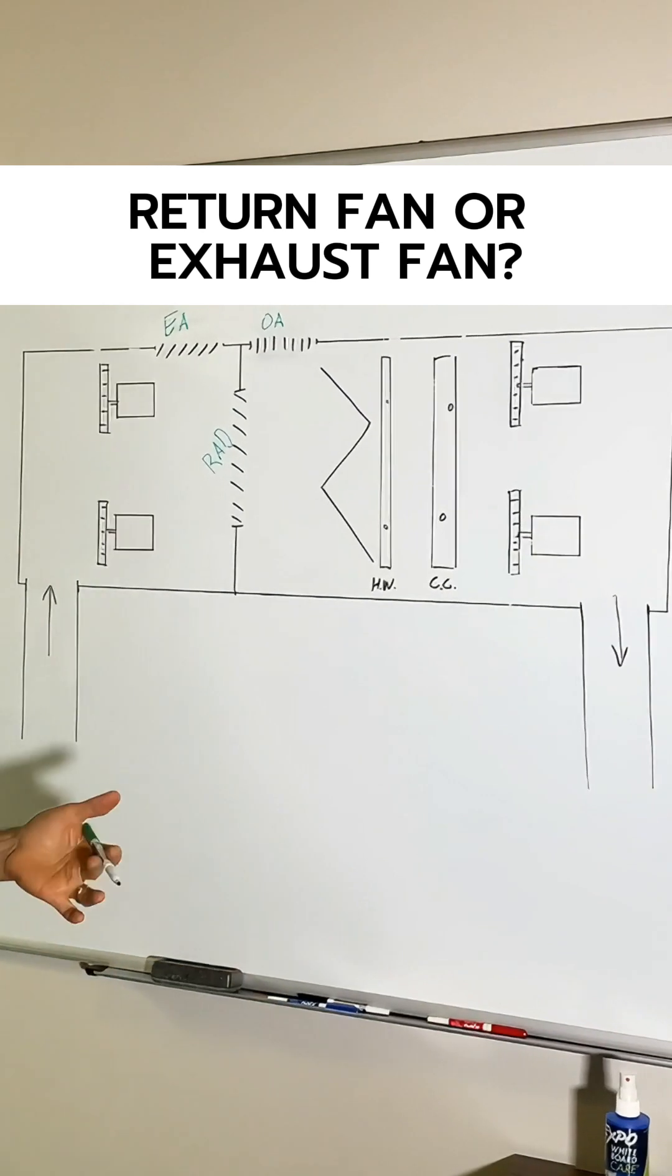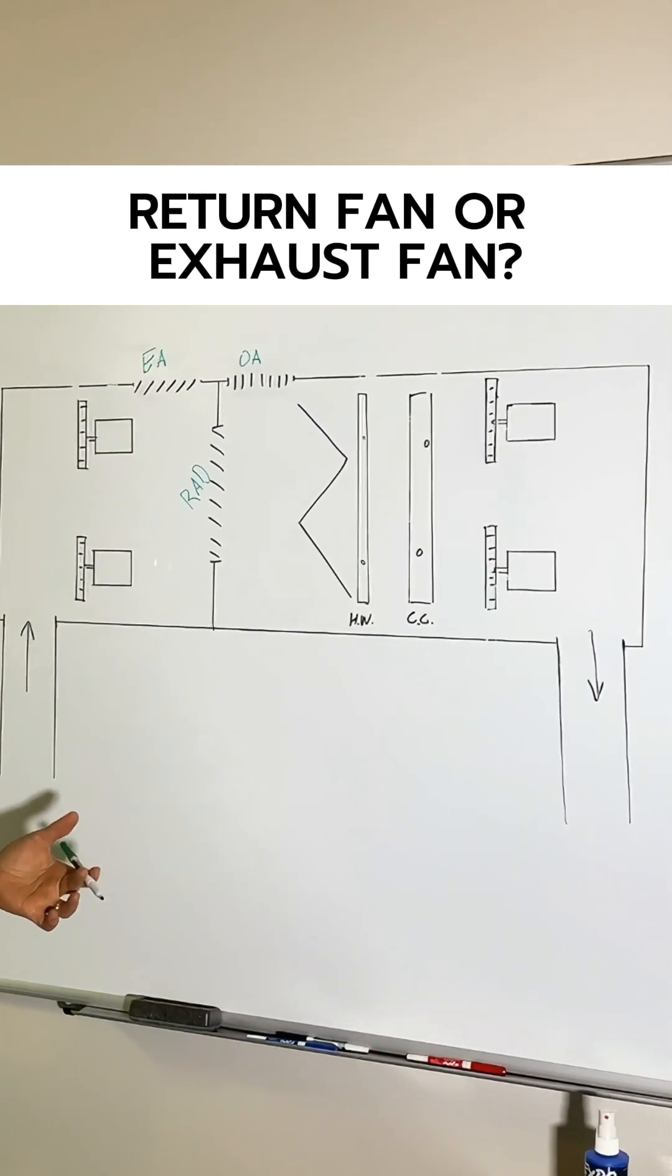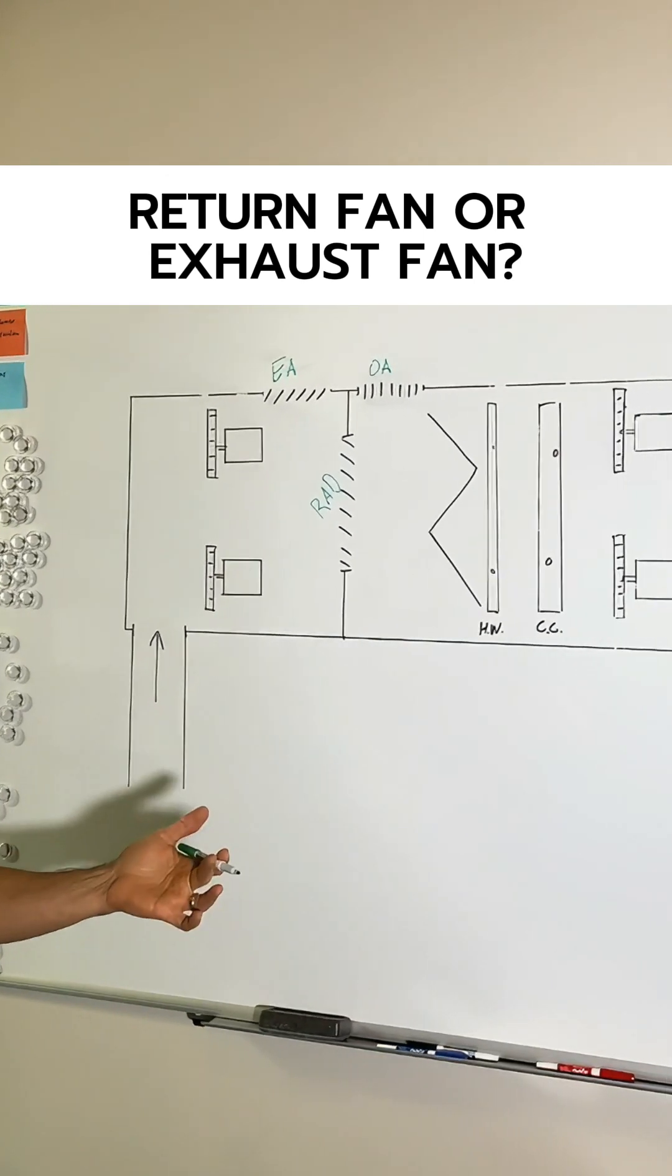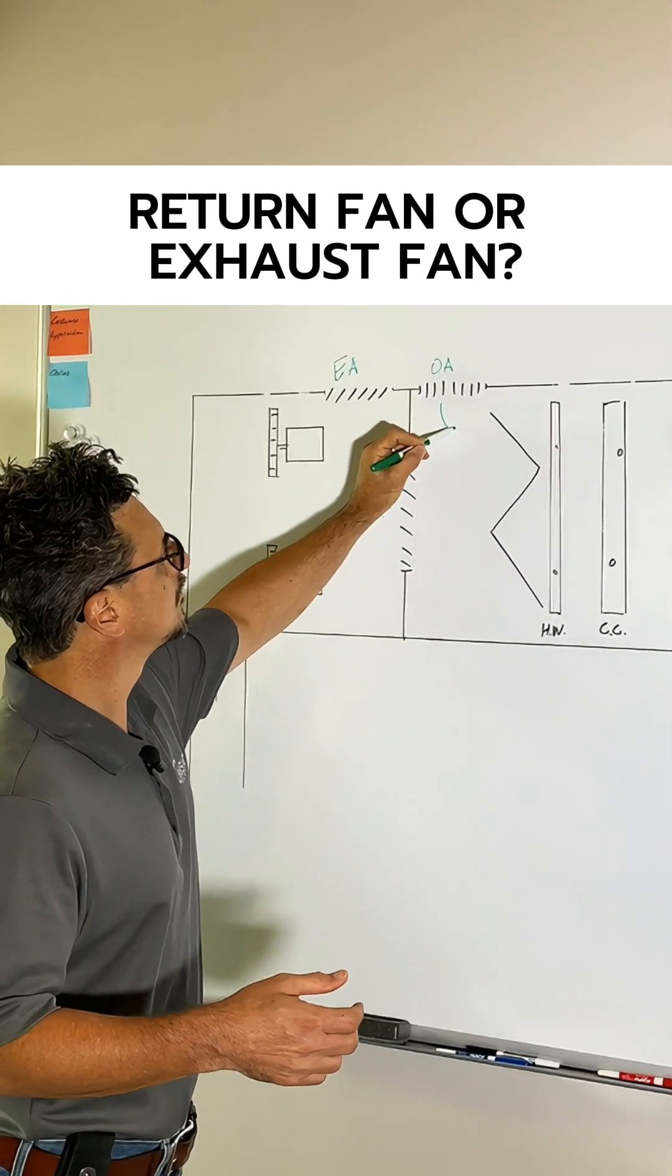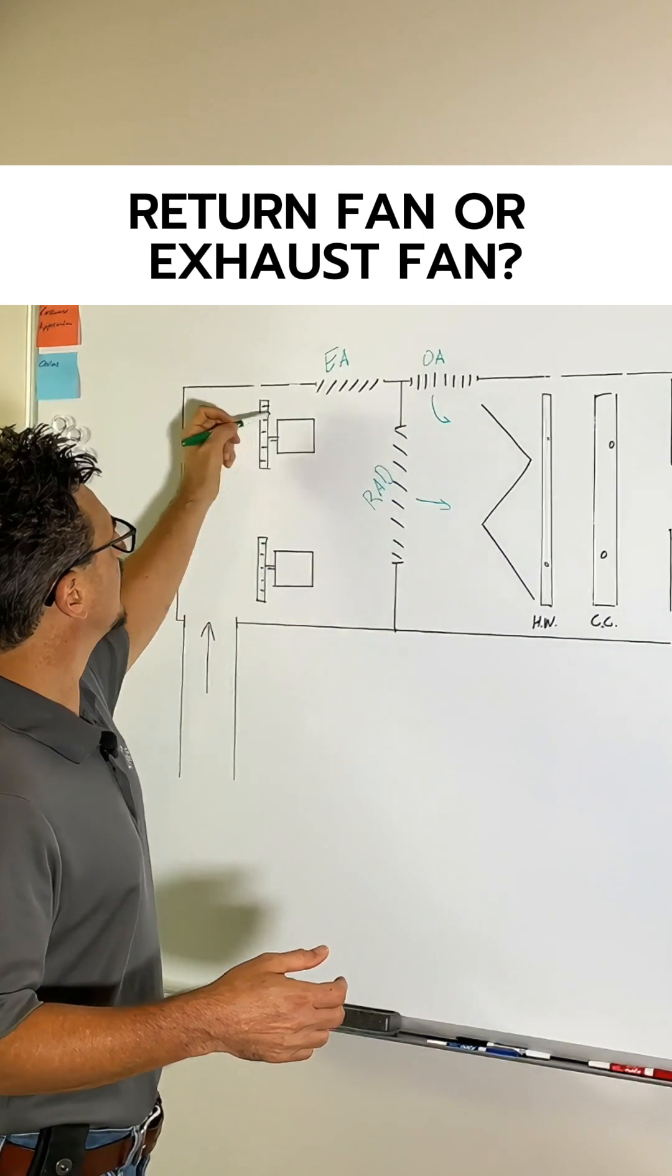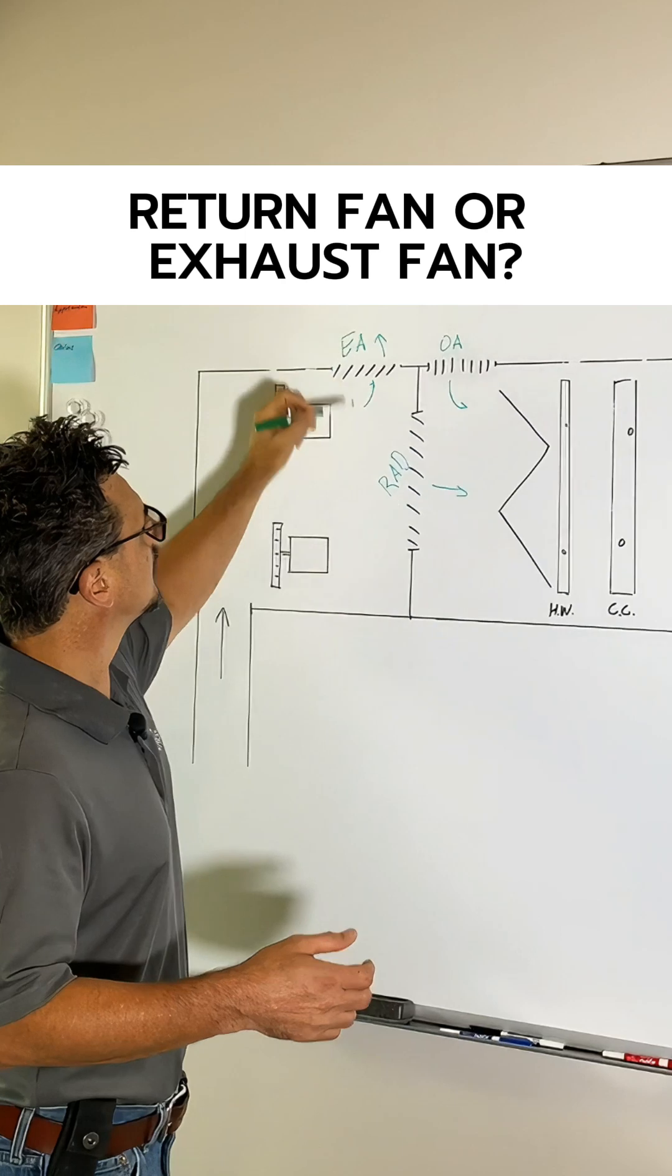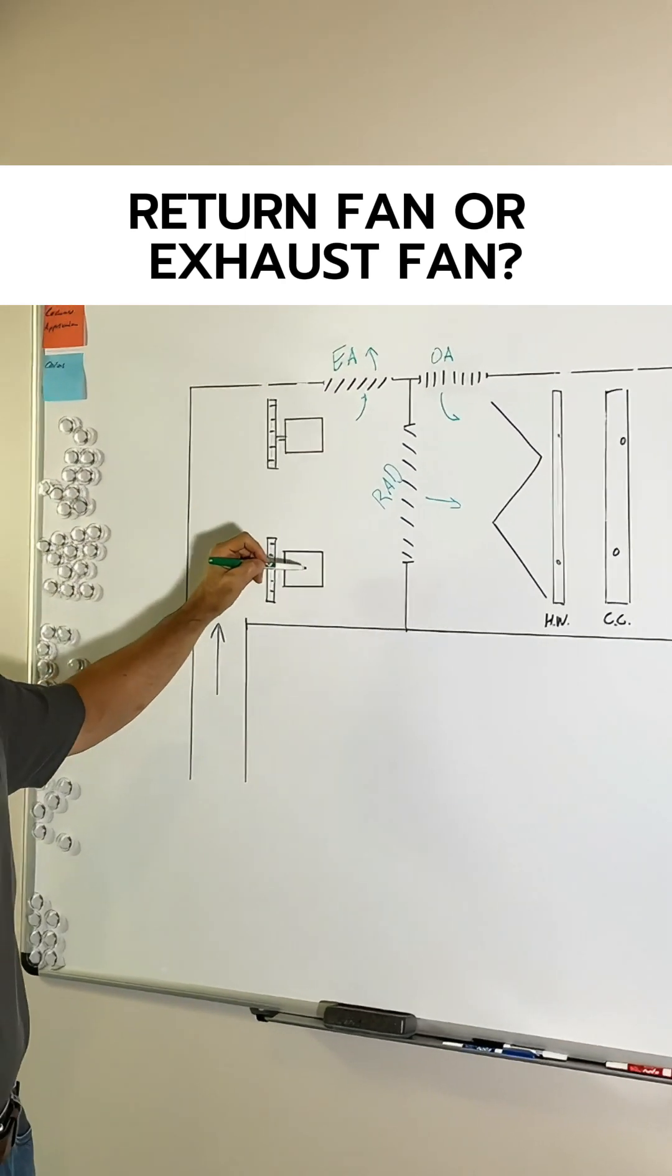So this is what is called a typical return air economizer, 100% economizer arrangement. So what happens is in general operation, let's say you have 20% outside air. Your outside air is coming in here, mixing with your return air, and your exhaust air is going out here.